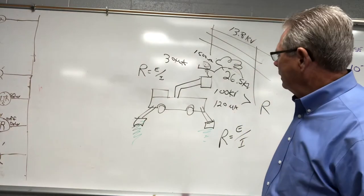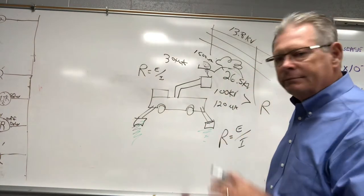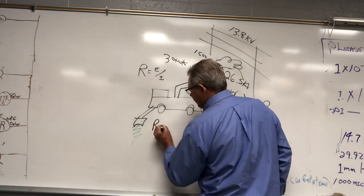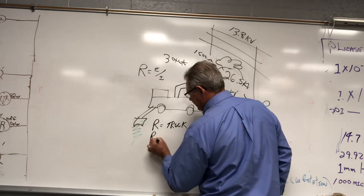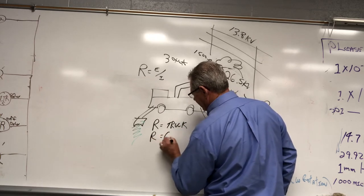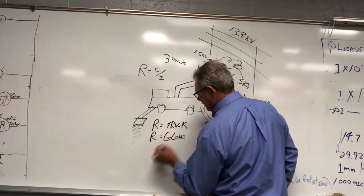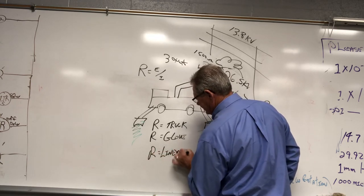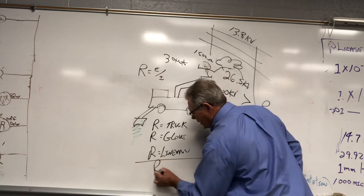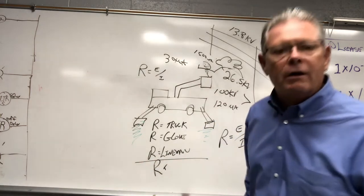So if we add all this up, if we add resistance of the truck, resistance of the glove, resistance of the lineman, then we get an R total, right? We get an R total.